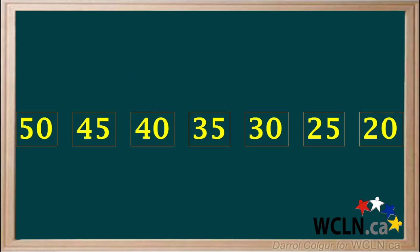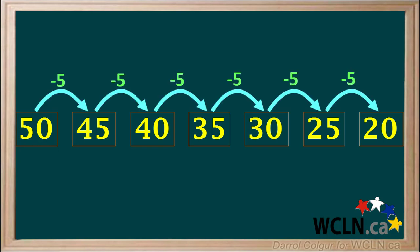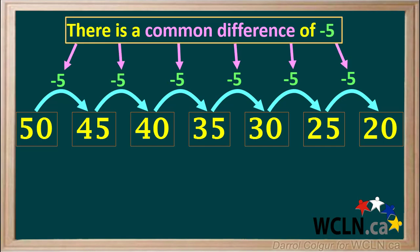Have a look at this set of numbers. Can you see a pattern here? You have probably seen that as we move from left to right, each number is 5 less than the previous one. So we say there is a common difference of negative 5. When numbers steadily decrease, the common difference is a negative number.